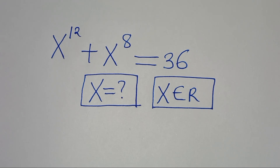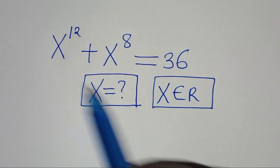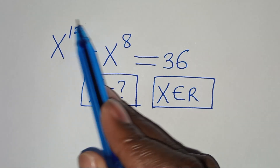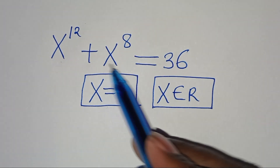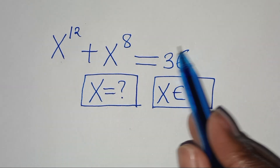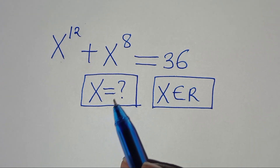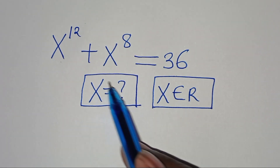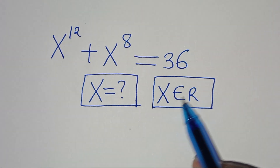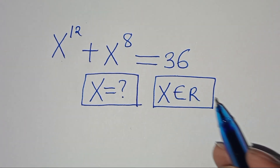Hello everyone, you are welcome to solve this nice algebra problem, which is x to the power of 12 plus x to the power of 8, this is equal to 36. So what is the value of x, given that x is a member of real numbers?